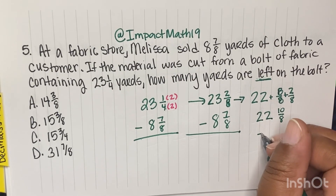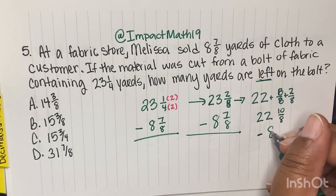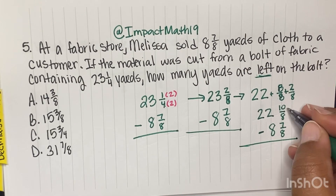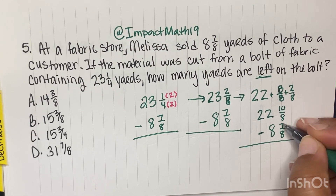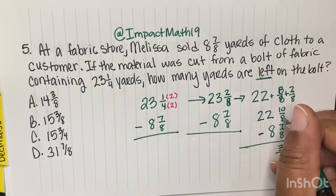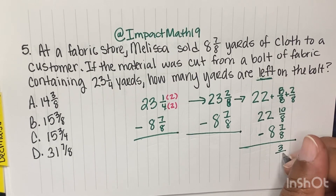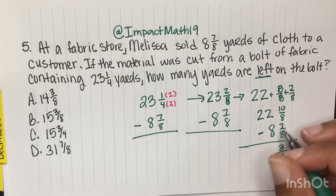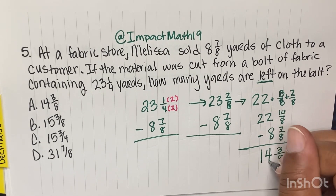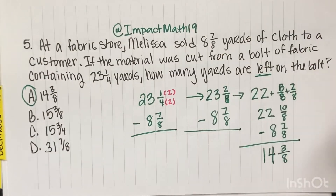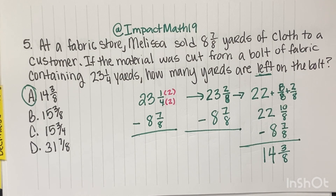Now we can do 10 minus 7, which gives us 3. Our denominator stays the same at 8. And 22 minus 8 gives us 14. So A — 14 and 3 eighths — is how much fabric we have left on the bolt.